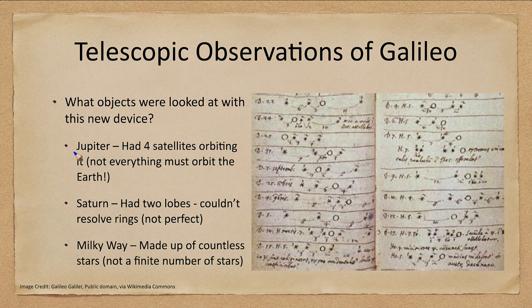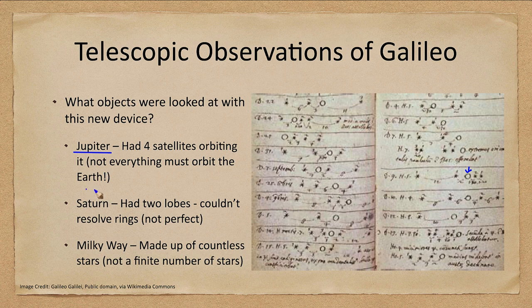Galileo also observed Jupiter and found that it had four satellites orbiting it, as shown in his sketches — the circle being Jupiter and the stars around it turning out to be moons actually orbiting it. This was also a key discovery. Even though it didn't prove anything about the Earth, it meant that not everything must orbit Earth, as had been previously thought. Things can orbit another object.